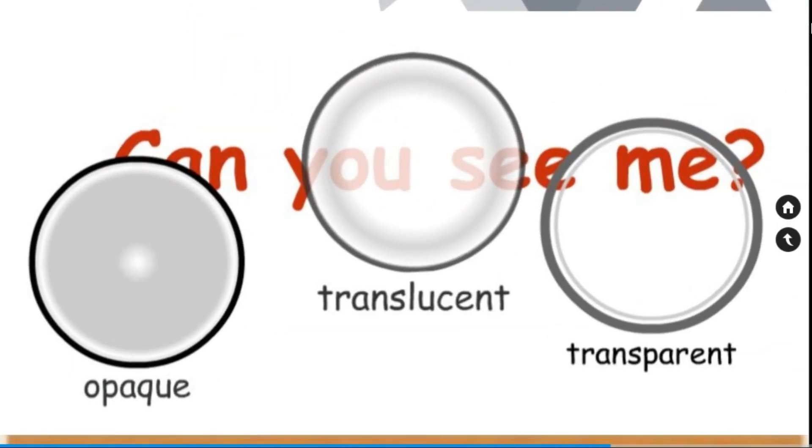The image shows how the object can be seen through opaque, translucent and transparent material.